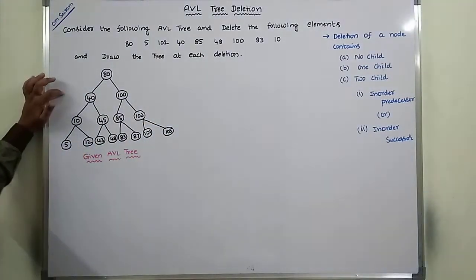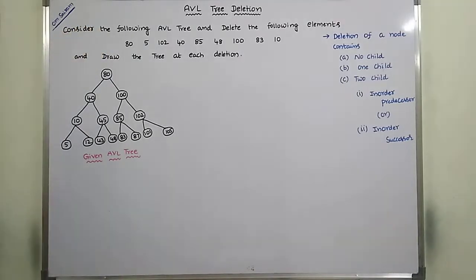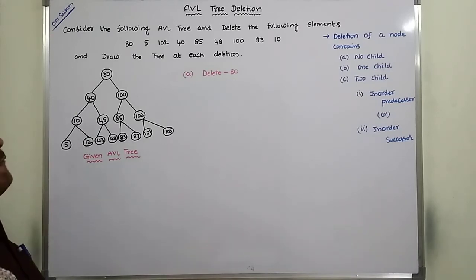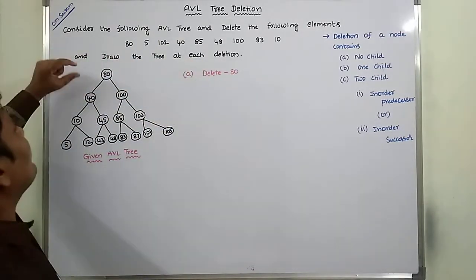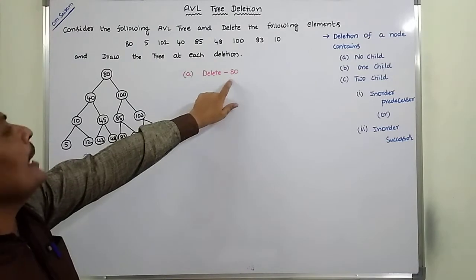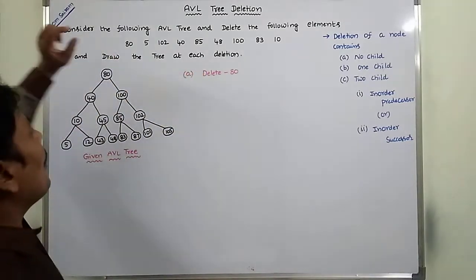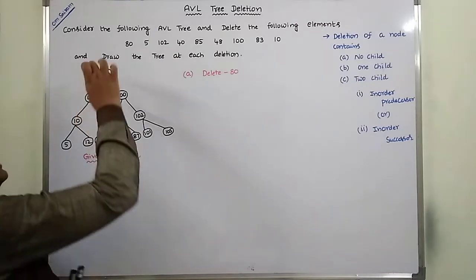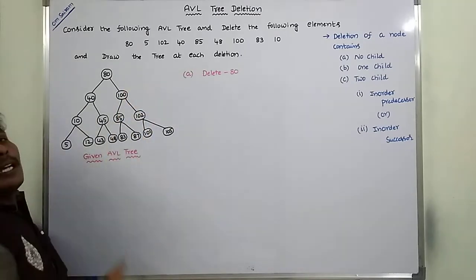Now we go to the example. This is the existing AVL tree. We have to delete these elements one by one. The first one is delete 80. First, we have to check where element 80 is in the AVL tree. 80 is compared with the root node value 80 — they are equal, so our deleted element is found. The deleted node 80 has two children: a left child and a right child.